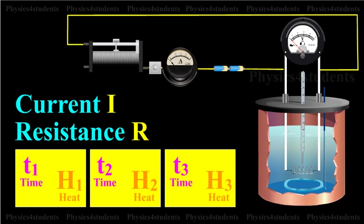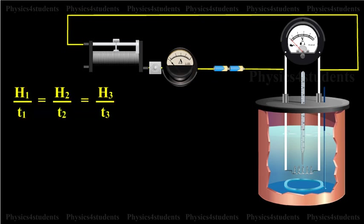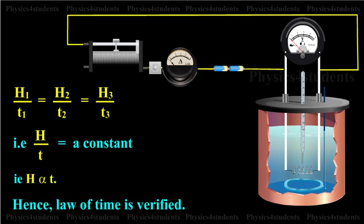It is found that H1 by T1 equals H2 by T2, that is equal to H3 by T3. So H by T equals a constant, that is H directly proportional to T. Hence, the law of time is verified.